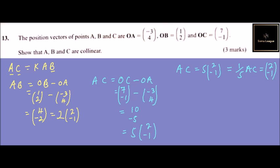We come to AB. AB equals 2 times 2, minus 1. If we divide both sides by 2, it implies that one-half AB equals the vector 2, minus 1.